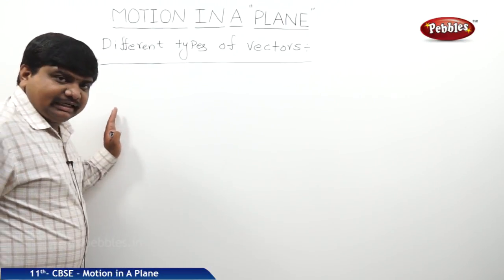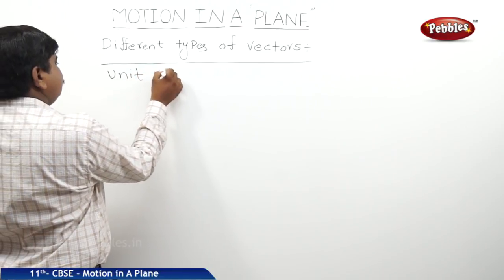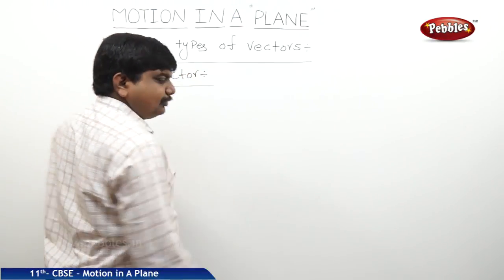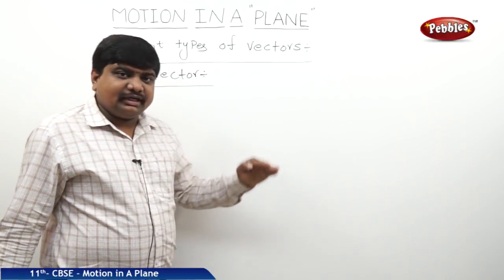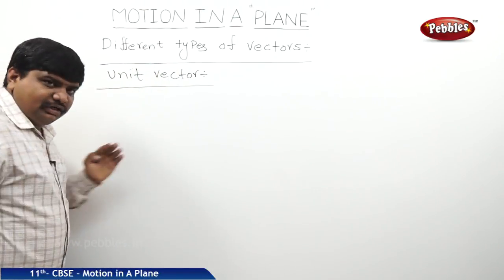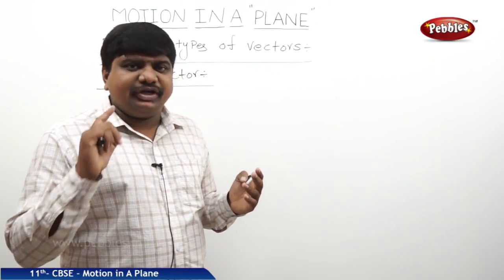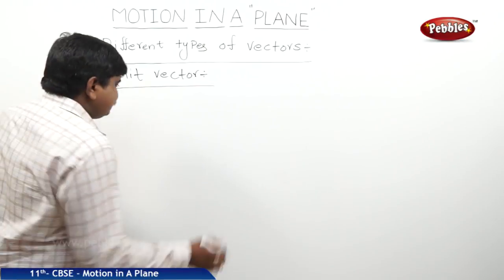The next different type of vector is unit vector. What is the meaning of unit vector? Initially in the zero vector, a vector has the magnitude zero is called null. So here unit vector means there are some vectors which has the magnitude one unit. So these type of vectors are called unit vectors.